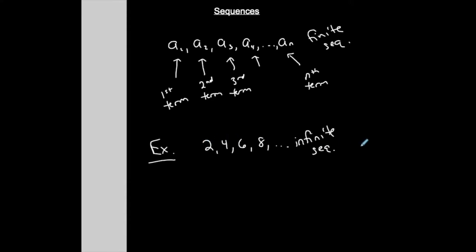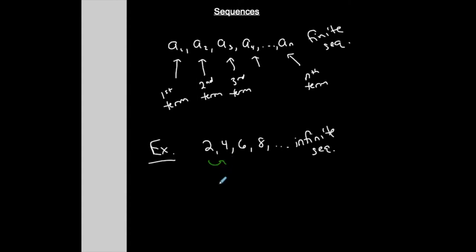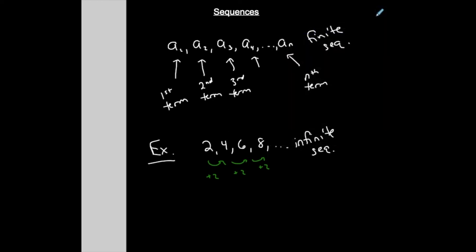Sometimes we have an infinite sequence but we only discuss the first few terms. In this case, let's say I only want to discuss the first four terms — I take a piece of the infinite sequence. Notice that this particular sequence has a pattern. From this term to this term, I added two. From this term to this term, I added two. There's a name for this type of sequence — I'll call it an arithmetic sequence. I'm adding the same number to each term to get to the next one, which means I can represent it with a formula.